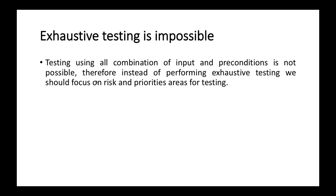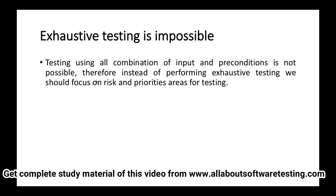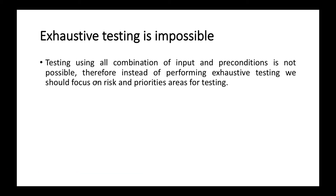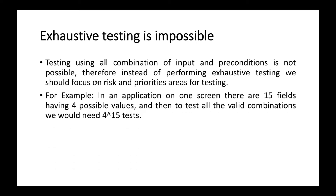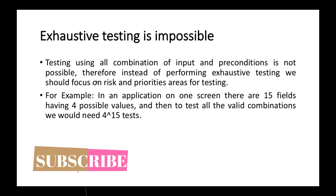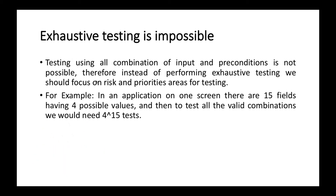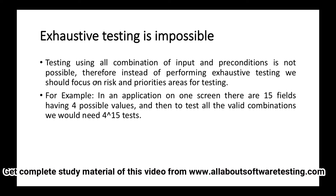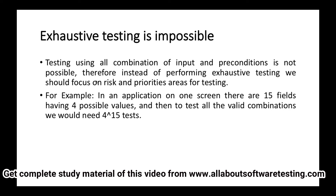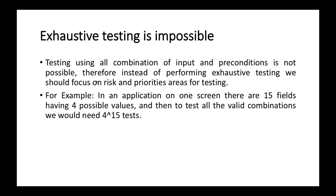Using all combinations of inputs for testing a field is not possible, so we should identify the areas in which the risk is more and focus on those. For example, in an application with one screen having 15 fields with 4 possible values each, to test all valid combinations we would need 15 to the power of 4 test cases. It is impossible to test all these valid combinations, so in an ideal scenario we will test using some random values but focus more on the risk areas.